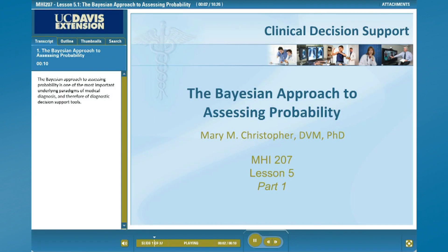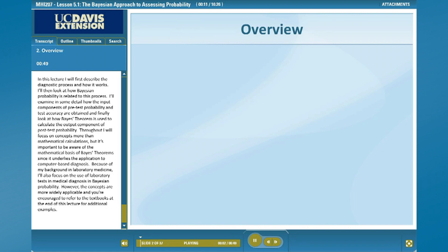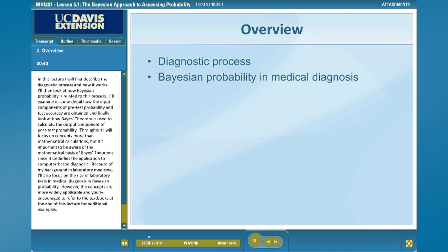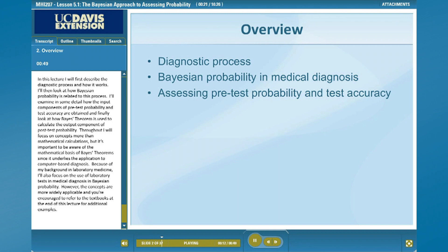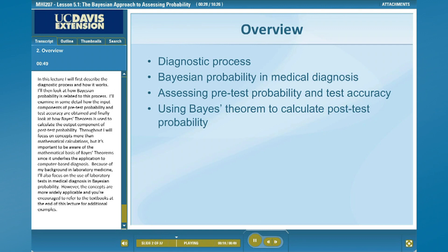The Bayesian approach to assessing probability is one of the most important underlying paradigms of medical diagnosis and therefore of diagnostic decision support tools. In this lecture, I will first describe the diagnostic process and how it works. I'll then look at how Bayesian probability is related to this process, examine in detail how the input components of pre-test probability and test accuracy are obtained, and finally look at how Bayes' theorem is used to calculate the output component of post-test probability.